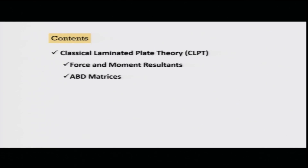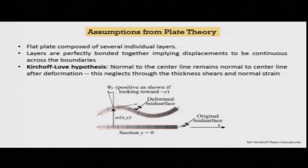What we will talk about is Classical Laminated Plate Theory. Many of you must have studied classical plate theory, and this is an extension of that for composites. Once we do this, it will help us develop Smart Classical Laminated Plate Theory. We need to first understand Classical Laminated Plate Theory, then discuss force and moment resultants, and how to develop the ABD matrices. The first important point is the basic assumptions of this theory.